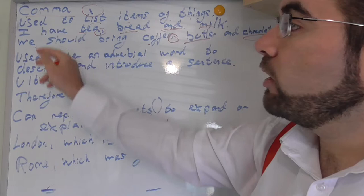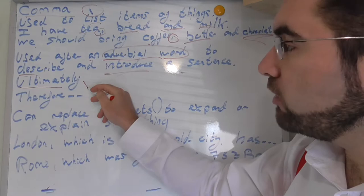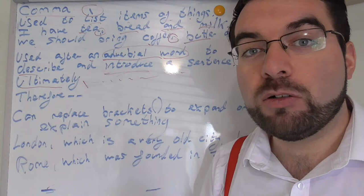So we use a comma after an adverbial word to describe or introduce a sentence. So we could say, ultimately, comma, dot dot dot. Ultimately this class will be done.